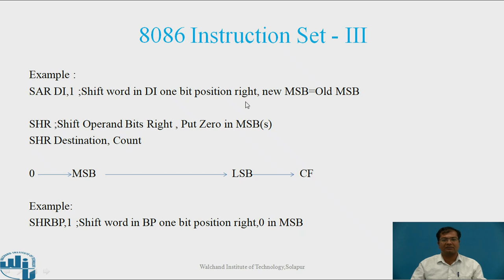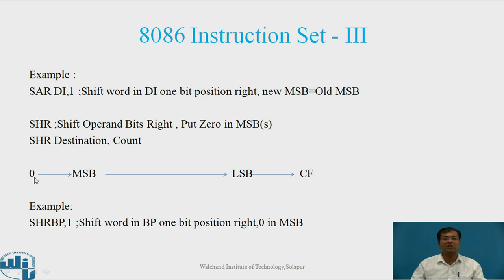The second type is SHR — shift operand bits right and put zero in MSB. The syntax is: SHR destination, count. The content of the destination will be shifted right; all bits are shifted right, LSB content is copied to the carry flag, and the new MSB is set to zero. Example: SHR BP, 1 — shifts the word in BP one bit position right and MSB is updated as 0.